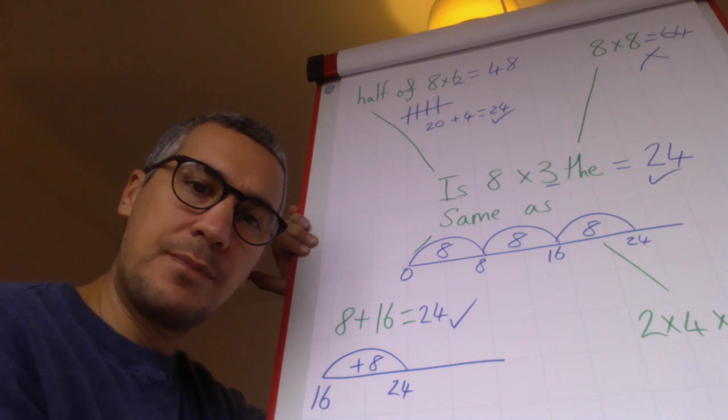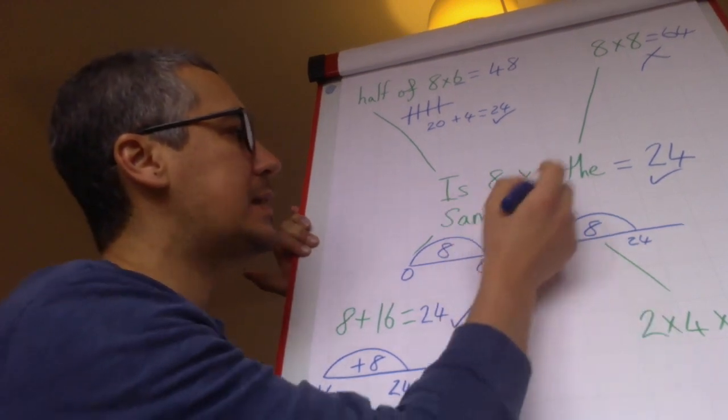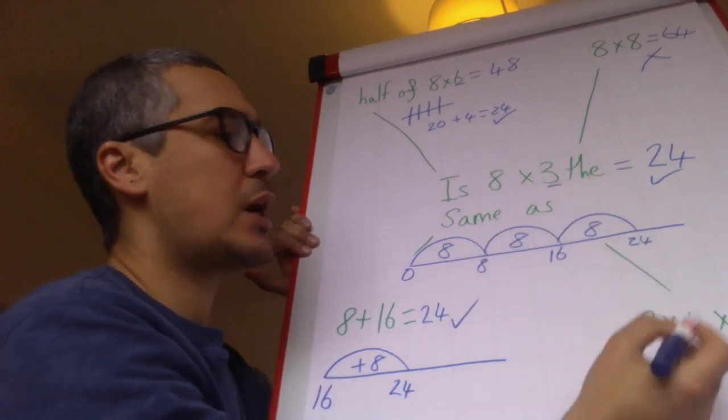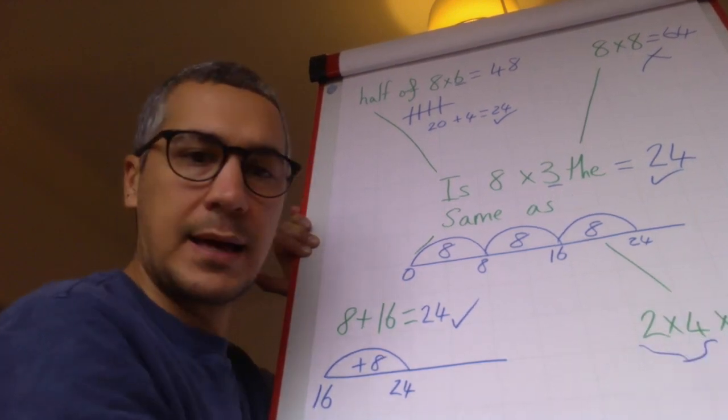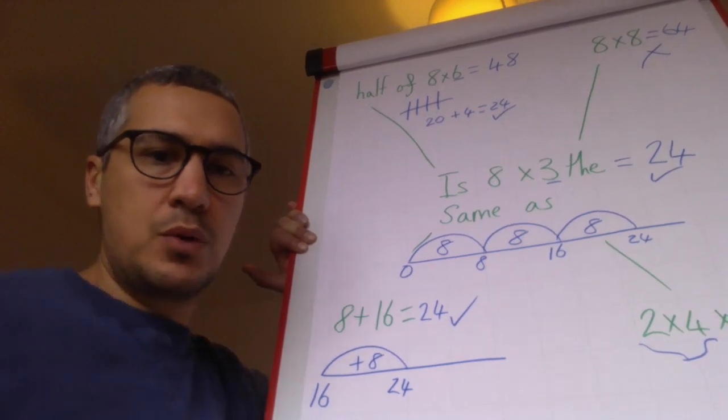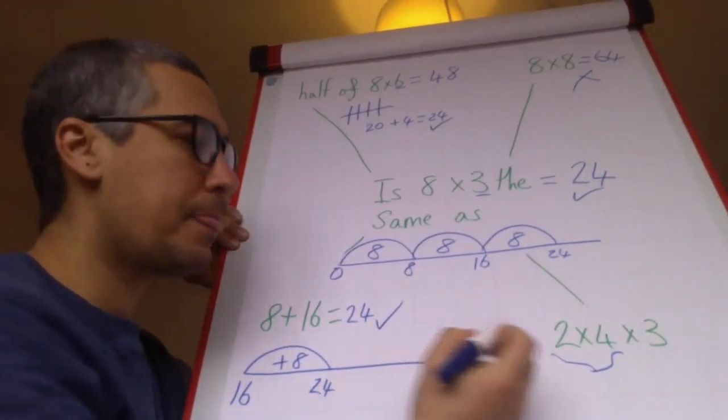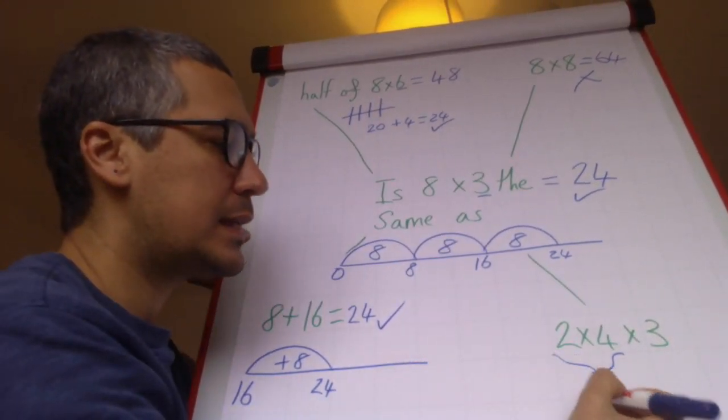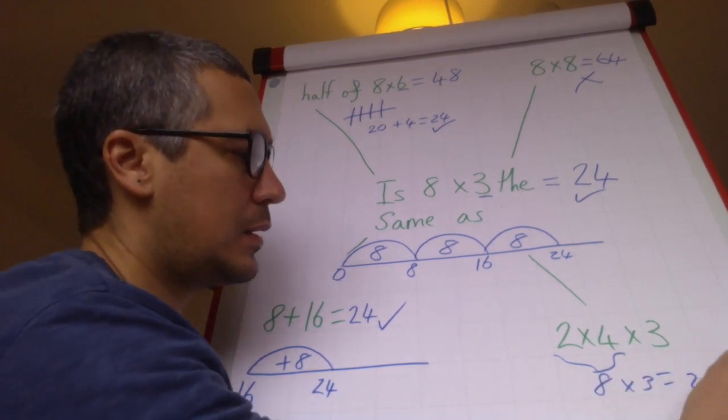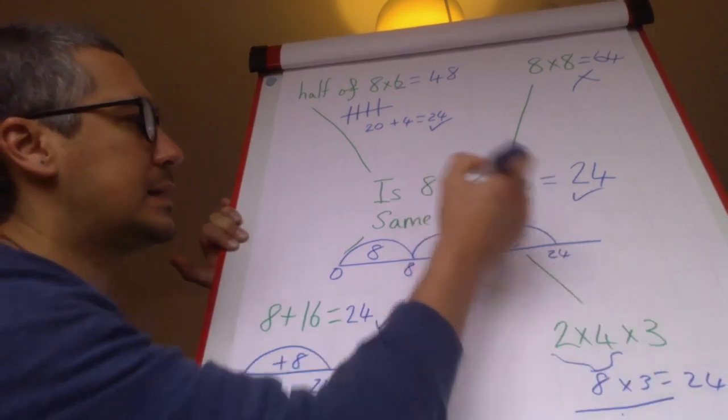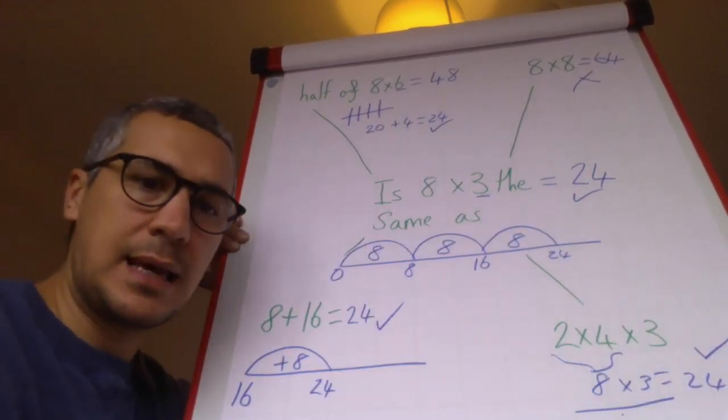And then over here I've got is 8 times 3 the same as 2 times 4 times 3. Now I know, let's just move that computer over a little bit more so you can see it. 2 times 4 equals 8, so 8 times 3 equals 24 because that is the same as that. So yes, that's the same.